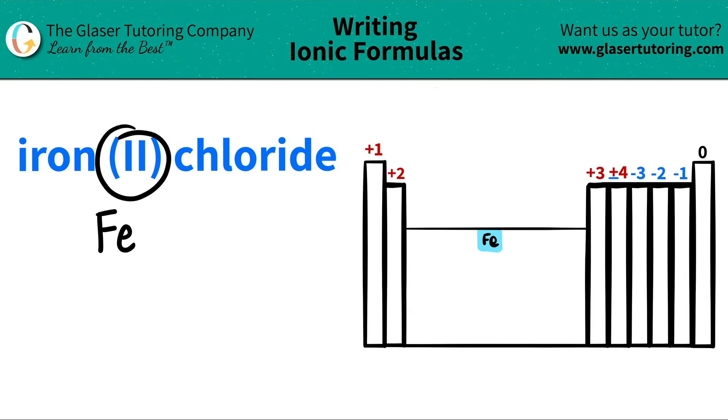Oh, that's why they tell me the Roman numeral. Remember, the Roman numeral is always the charge of the metal. So in this case, the Roman numeral is a 2, so I'm going to write that iron is a +2. Notice that metals are always going to be positive. They're always going to lose electrons. So iron would never be a -2, but a +2.